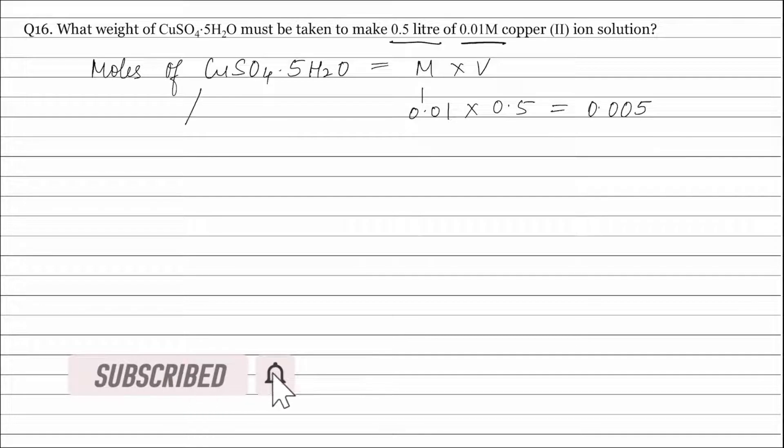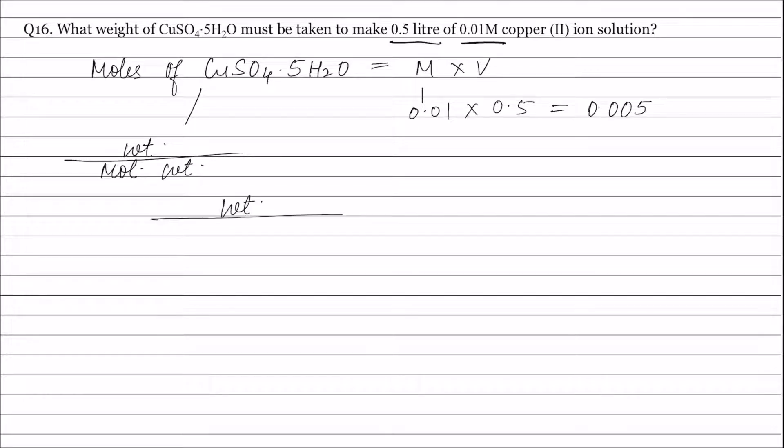The formula for moles is weight divided by molecular weight. Therefore, we can write: weight of copper sulphate divided by molecular weight of copper sulphate. The molecular weight of CuSO4·5H2O is 249.55, and this equals 0.005.